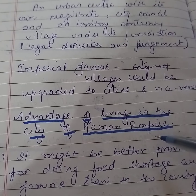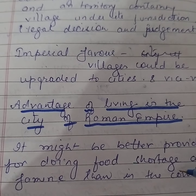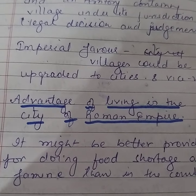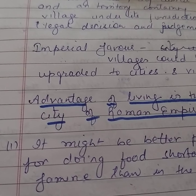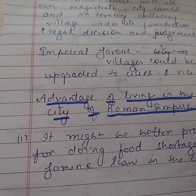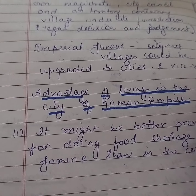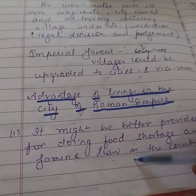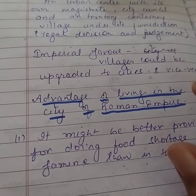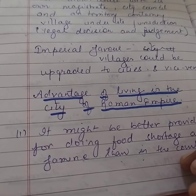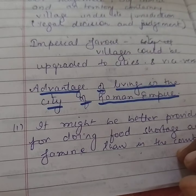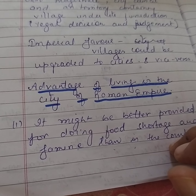One crucial advantage of living in the city was that it might be better provided for during food shortage and famine than in the countryside. Dr. Galen's statement explains this: there was a famine for many successive years resulting in food scarcity. But the people living in the city had the facility of hoarding grains — they collected enough grain for a whole year after the harvest, storing wheat, barley, beans, and lentils. Meanwhile, the countryside had to depend on unhealthy food in spring — eating twigs, shoots of trees and bushes, and bulbs and roots of inedible plants.